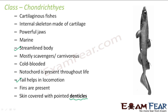Since Chondrichthyes are scavengers that catch prey, some of them have an electric ray which helps to paralyze the prey. Torpedo is an example with an electric ray. Similarly, some fishes have a poison sting which injects poisonous fluid into the prey. Trigon is an example of a Chondrichthyes with a poison sting, and these adaptations help them to catch prey.